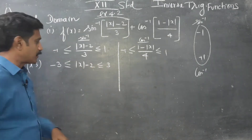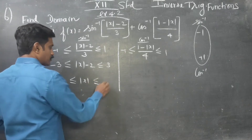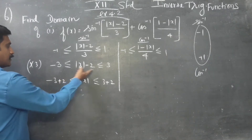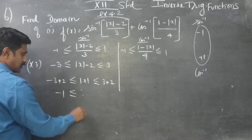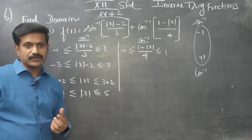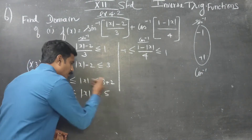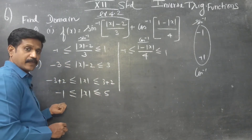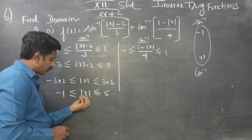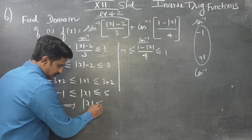Now, minus 3 minus 2 gives: minus 3 minus 2 less than or equal to mod x less than or equal to 3 plus 2, which becomes minus 5 less than or equal to mod x less than or equal to 5. Since modulus is always a positive value, a negative value for mod x does not arise. So mod x less than or equal to 5.